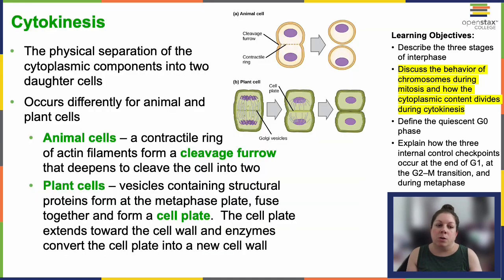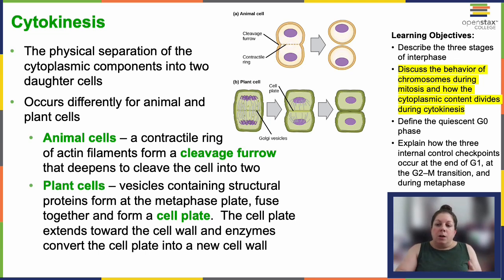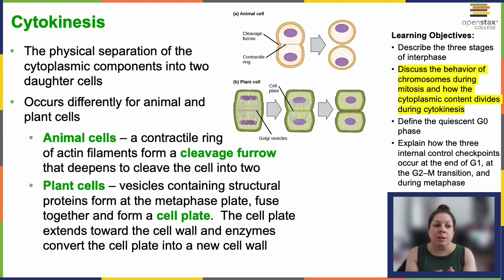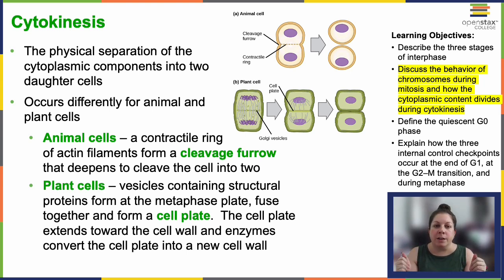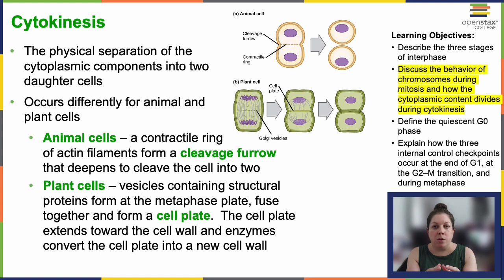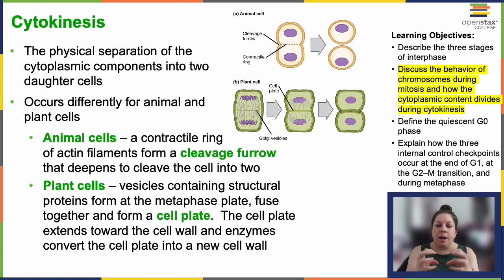Then finally we have cytokinesis. The chromosomes have separated appropriately and cell materials — including mitochondria — have separated across the cell. In animal cells, a contractile ring begins to form. The actin-based cytoskeleton components move toward the middle where the metaphase plate used to be, forming a ring that pulls the membrane inward, creating two bubble-like regions. It gets tighter and tighter until it splits apart, yielding two separate daughter cells.